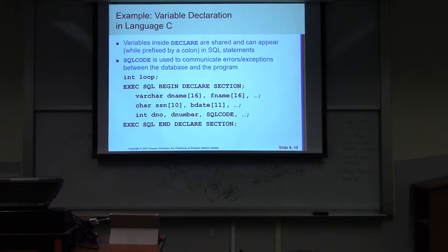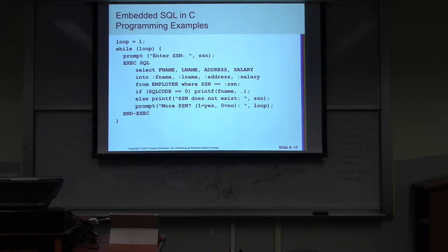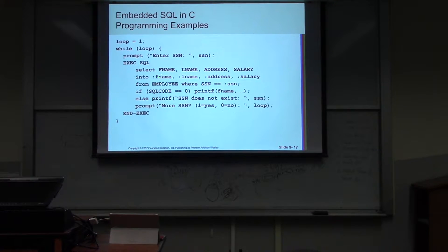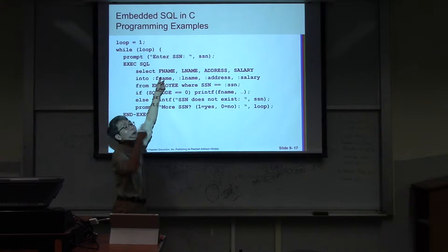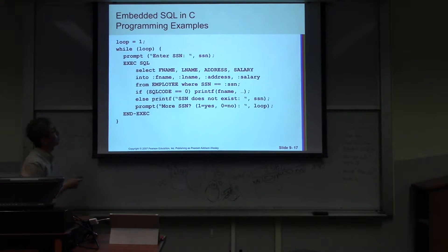For embedded SQL — the SQL block. EXEC SQL begin, EXEC SQL end. Inside is the database language. There is a declare section, which means we need to have common variables between the host language and database language defined here. For example, the loop variable — this is a host language C variable. But if you want to use SQL, you see the semicolon — that means it's a host language variable that will be used inside the SQL block. The output will be stored in memory, then we are able to access and return the data.